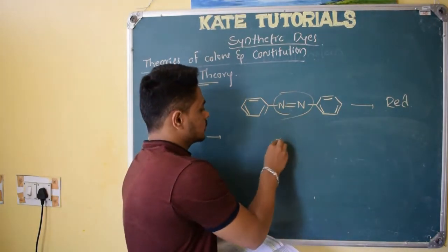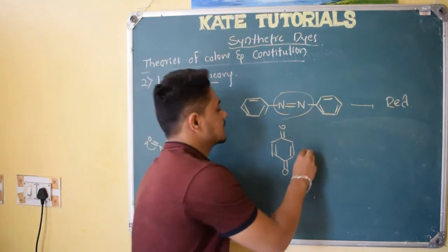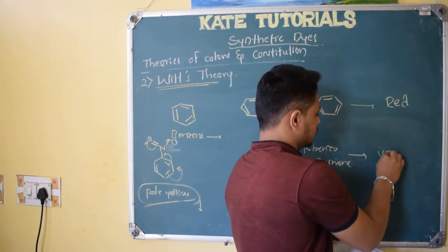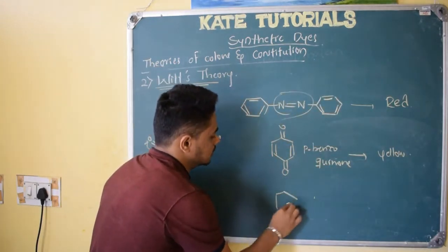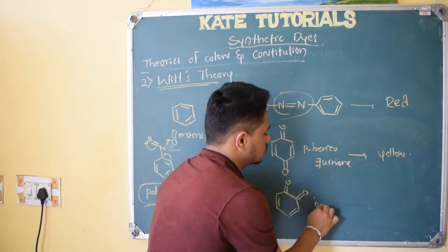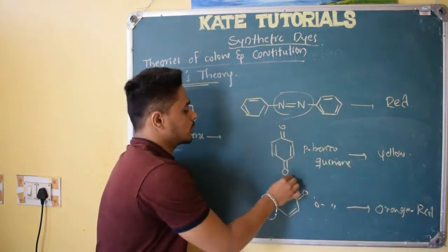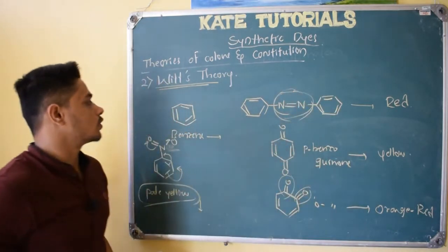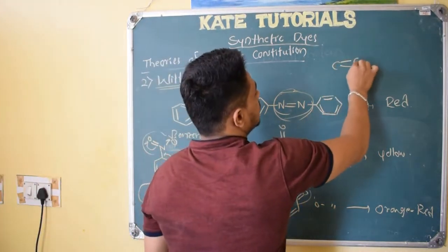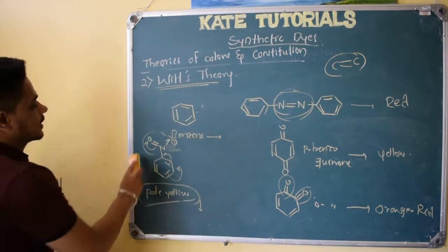If a substance appears red, it absorbs the complementary color — green. Using VIBGYOR, it appears red means it absorbs green wavelength. Azobenzene appears red, and the N=N azo group acts as a chromophore. Para-benzoquinone — with two C=O groups — appears yellow. Ortho-benzoquinone appears orange-red. All these colors are due to chromophores. Benzene with C=C is also a chromophore, but its wavelength doesn't lie in the visible region, so benzene is colorless.